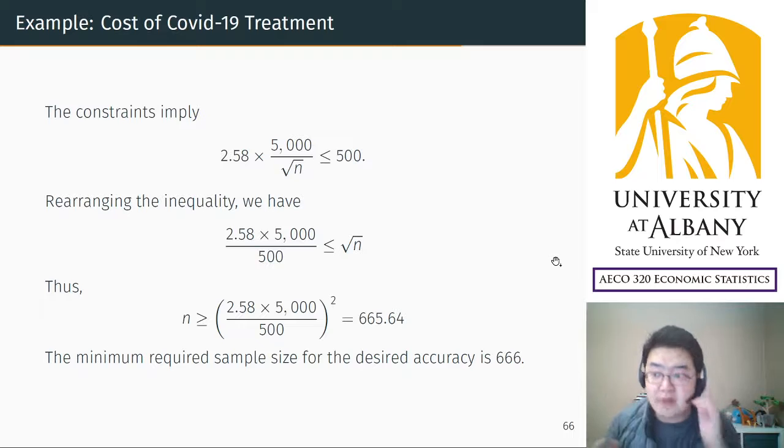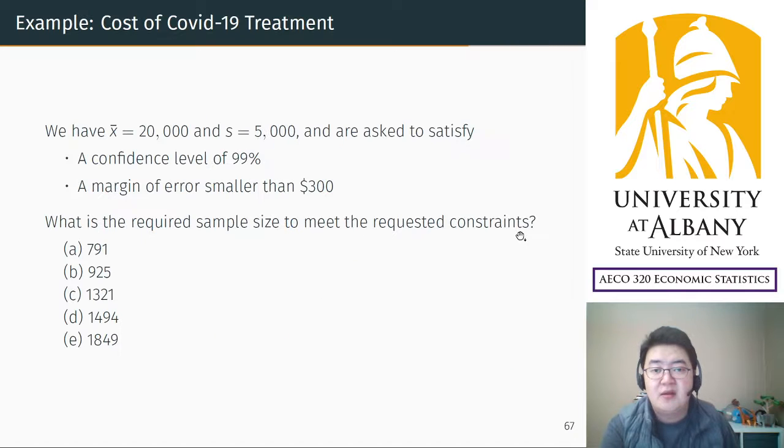Then I will ask you a similar question. The structure is the same. We use 99%, but the insurance company wants even better accuracy. The margin of error has to be smaller than $300. What is the minimum sample size to do this? Please do the algebra. Do it by yourself. I am going to turn to the next page. You have to stop the video if you have not finished the algebra.